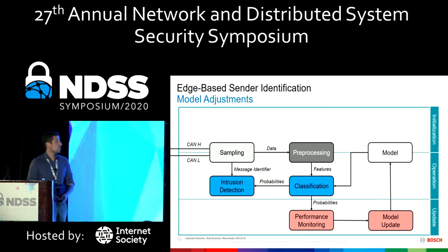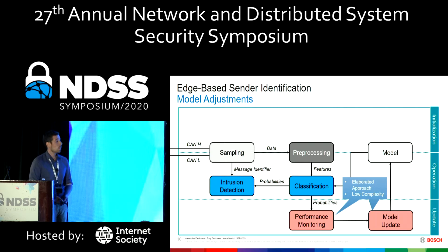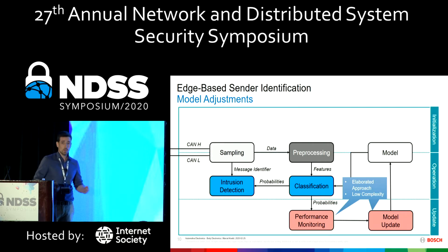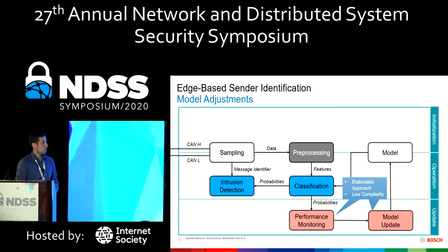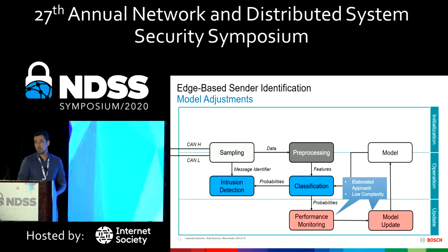We also have a model adjustment phase. We monitor the confidence of the classifier, and if performance decreases slightly, we can update the model during runtime while we still have good classification results. If the car is in a workshop and you have an abrupt drift in signals, then you have to do a model adaptation or update. Here we do not need to rebuild the whole model — we just need 8 or 16 frames per ECU to adapt the model. This requires some kind of secured labeling, like MACs, for a short amount of time, so it is not real-time-capable compared to using MACs for the whole communication.